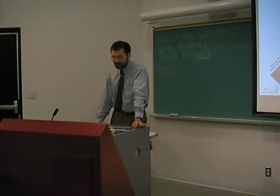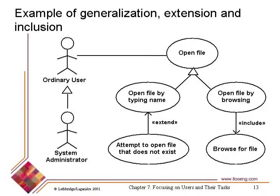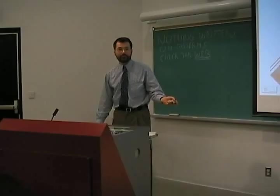Notice the symbology: the triangle pointing upwards to 'open file' is the generalization — the same symbol as in class diagrams, used throughout UML meaning 'here's the general case.' The arrows are associations using particular stereotypes with angle brackets: 'extend' and 'includes' are built-in stereotypes in UML. We also have generalization of actors themselves — the system administrator is a special kind of ordinary user, able to do everything the ordinary user can, plus additional things.